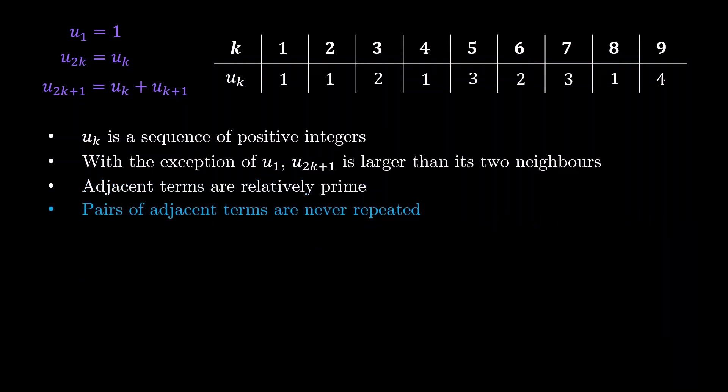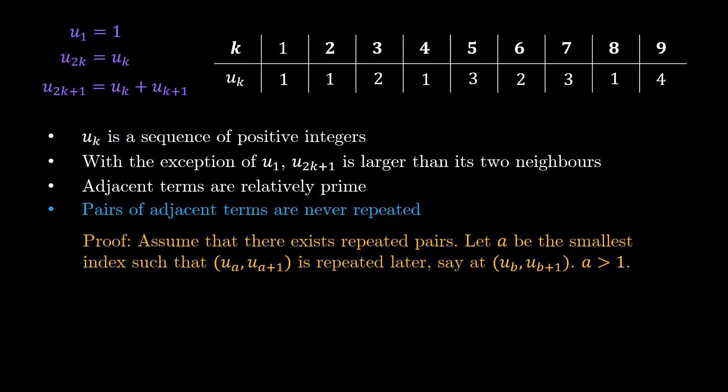The next statement we will prove is that pairs of adjacent terms are never repeated. And once again, we will use proof by contradiction. Assume that there exists repeated pairs. We let a be the smallest index such that ua, ua+1 is repeated again later. Say it is repeated at ub, ub+1. Okay, what do we do now?